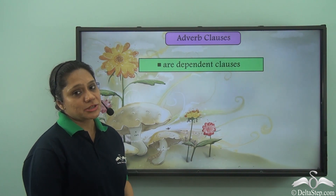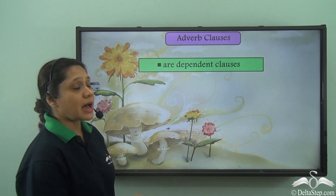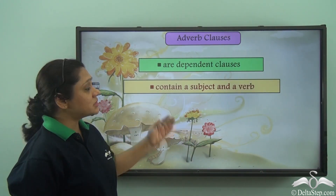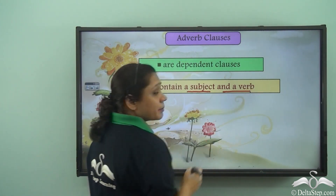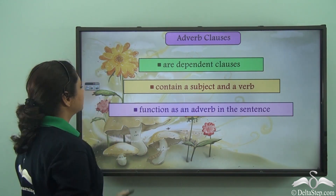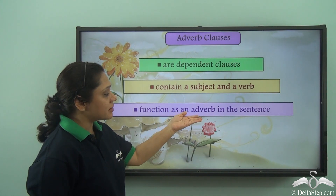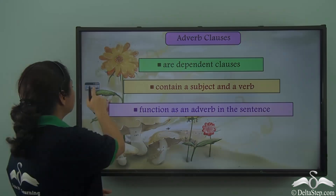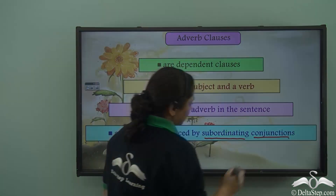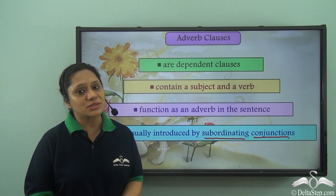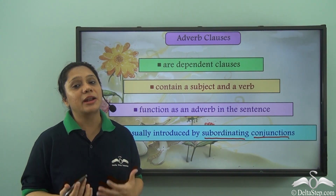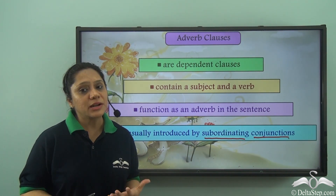So what did we learn today? We learnt that adverb clauses are dependent clauses. They contain a subject and a verb, because every clause must necessarily contain a subject and a verb. They function as an adverb in the sentence and are usually introduced by subordinating conjunctions. Practice by picking up different sentences and trying to identify adverb clauses in them.